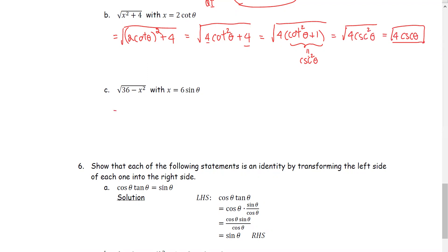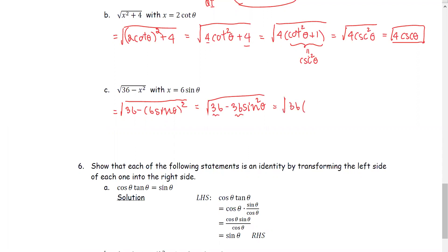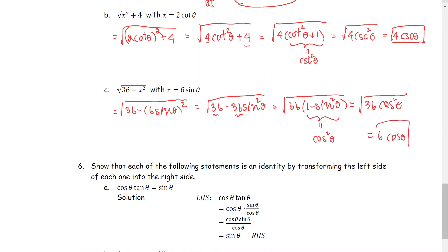In part c, square root of 36 minus the quantity where x is 6 times sine theta squared. Squaring 6 sine theta gives us 36 minus 36 times sine squared theta. We see 36 and 36 as a common factor: 36 multiplied by 1 minus sine squared theta. And 1 minus sine squared theta is equivalent to cosine squared theta by the Pythagorean identity. Now we have square root of 36 multiplied by cosine squared theta. Taking the square root gives us 6 times cosine theta.